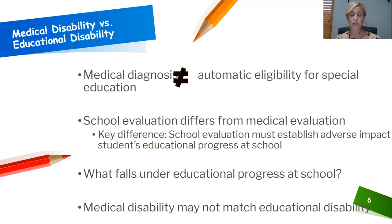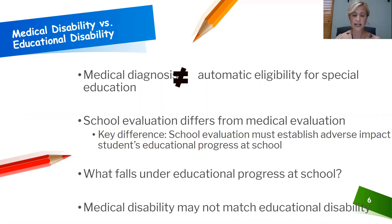It's also important for parents to know that there are only 13 educational disability categories provided by the state of Ohio. This means that many medical disabilities such as ADHD and anxiety do not fall under their own category and will fall under a specific educational disability category. For example, many students with ADHD receive special education services under the educational category of other health impairment.